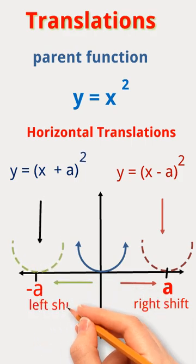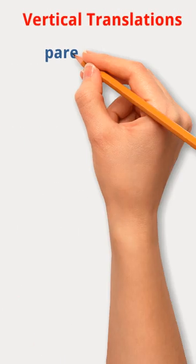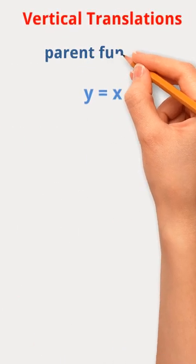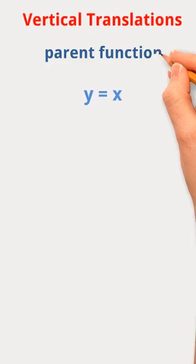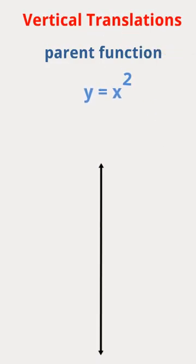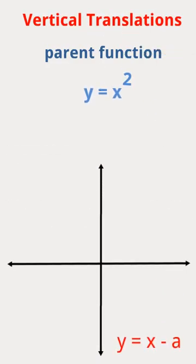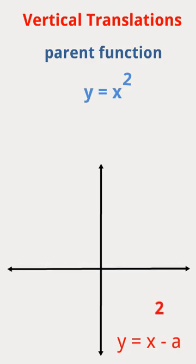Vertical Translations: The parent function is y equals x squared. When the equation is given by y equals x squared minus a, there will be a shift in the parent graph downward by a units.